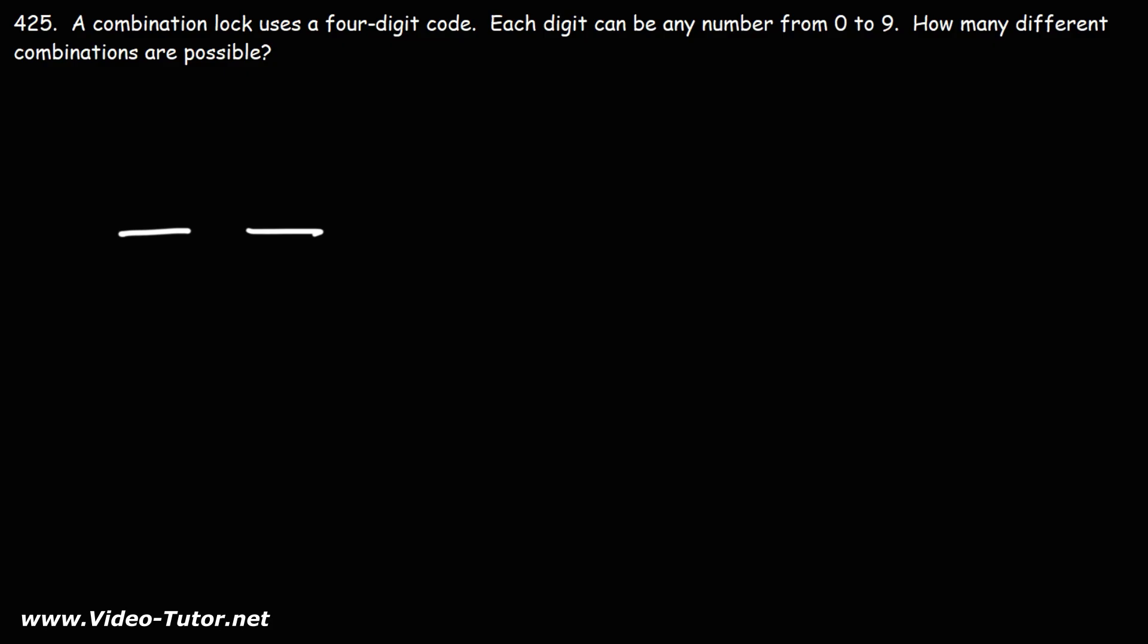So this lock has a four-digit code. Each spot will take one digit. Now in the first spot we can choose anything between 0 and 9, but we can only choose one of these numbers from 0 to 9 at a time, and the same is true for all four spots.